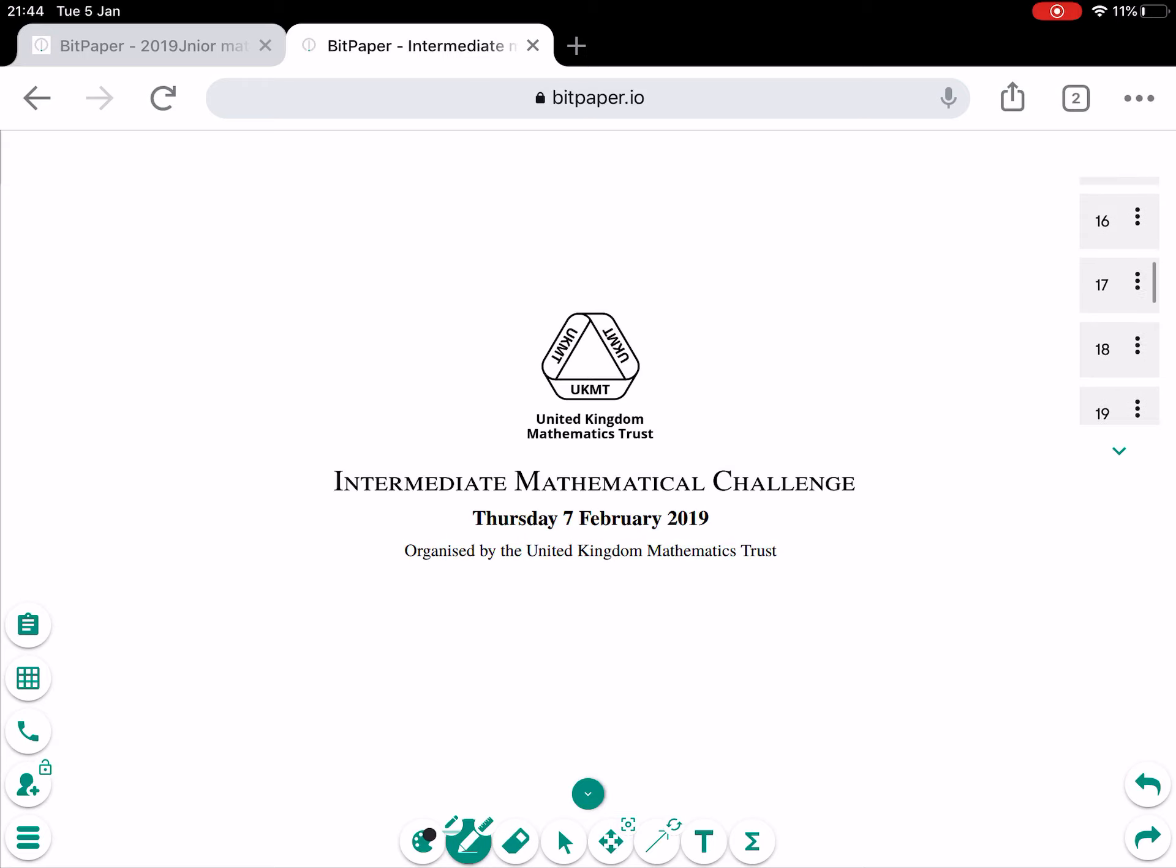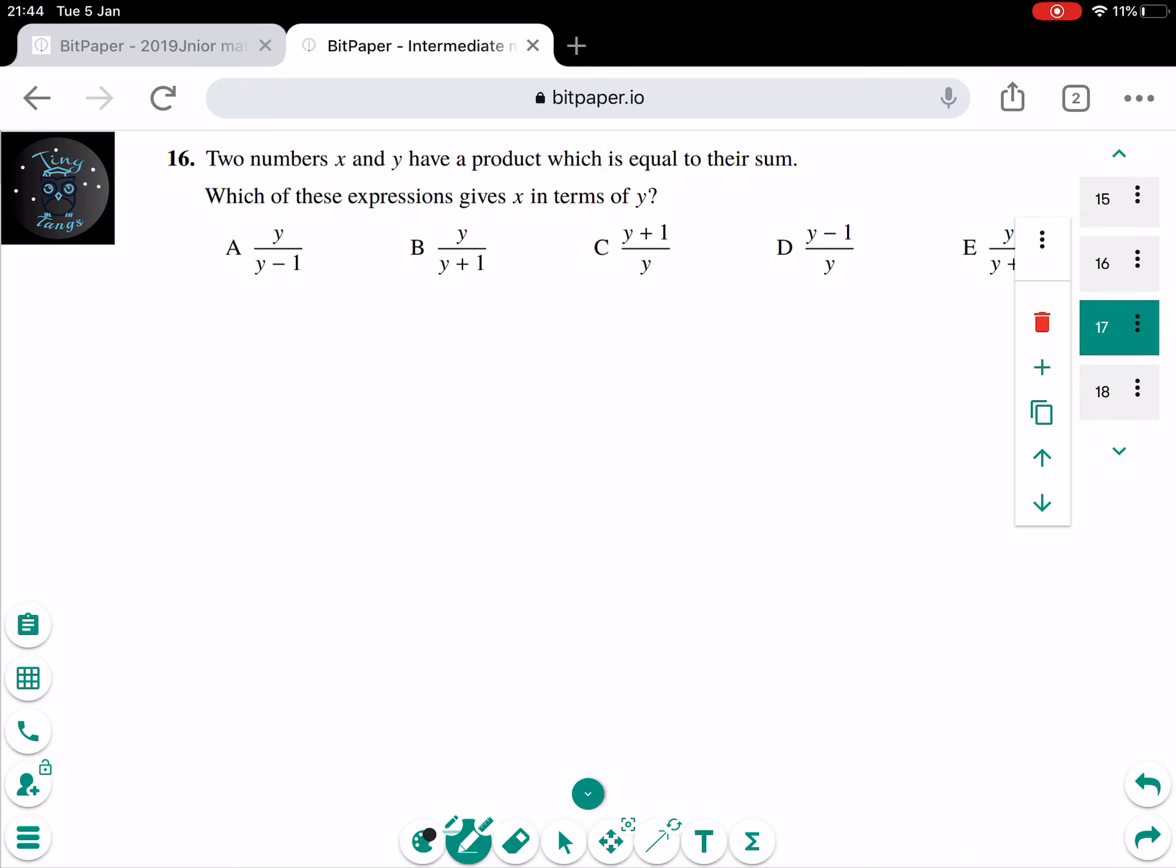The 16th question says that x and y have a product which is equal to the sum. Which of these expressions give x in terms of y? What I did here was I gave examples, so x equals 2 and y equals 2, so that would work because 2 plus 2 equals 2 and 2 times 2 equals 2. So x in terms of y, let's just try them out.